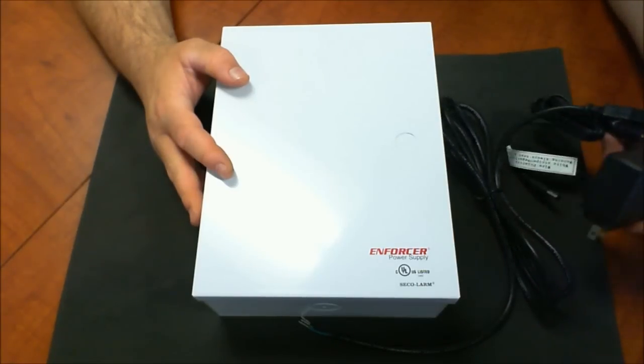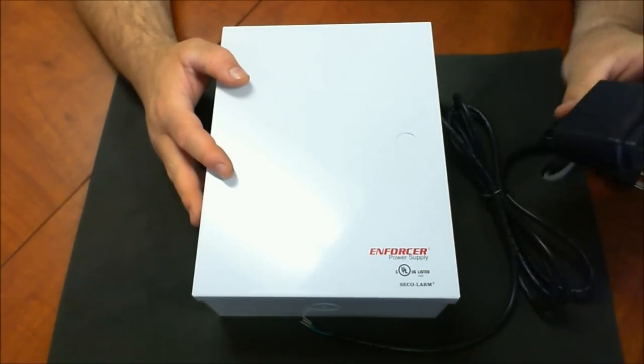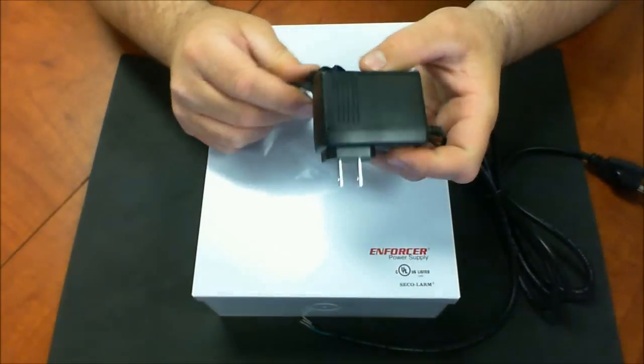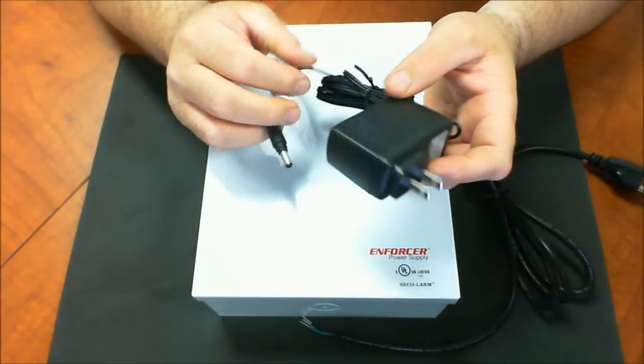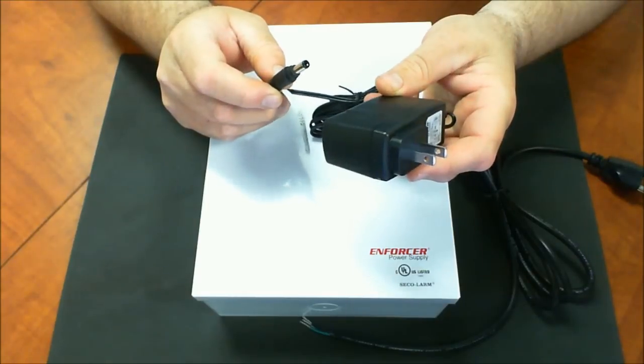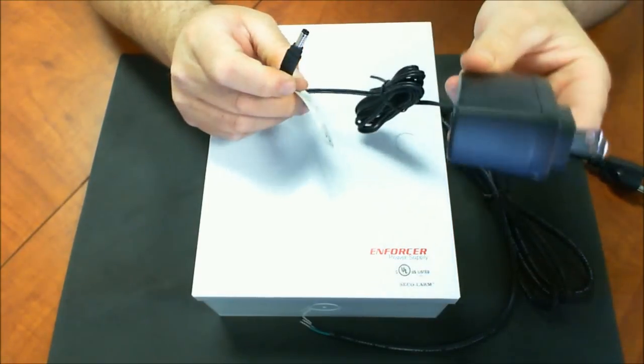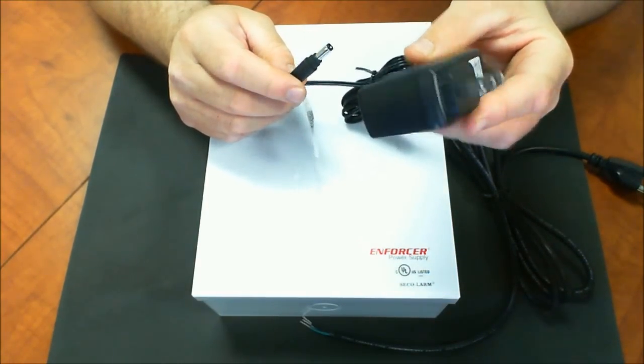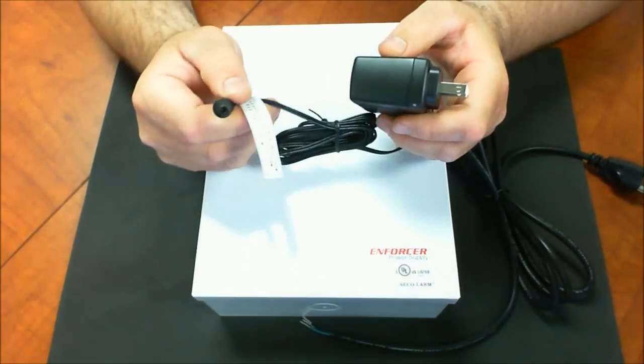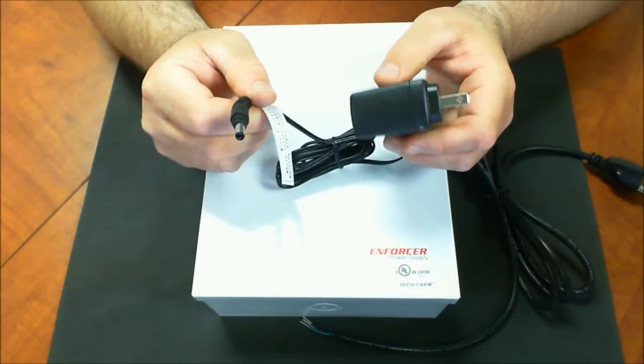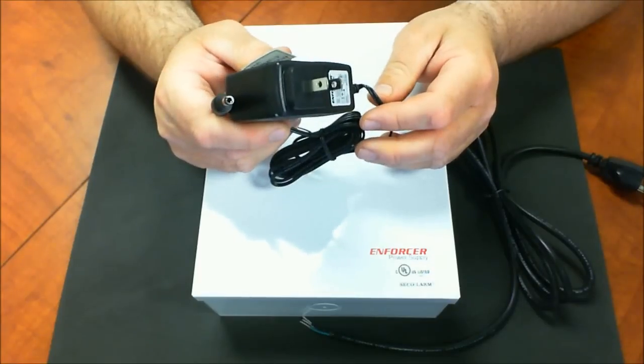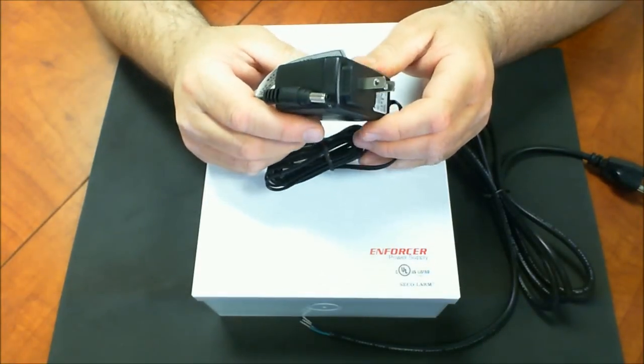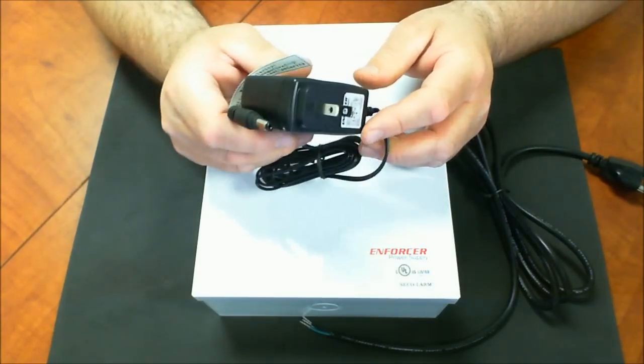Two of the most popular ways to power cameras: one is you can use a 12-volt DC plug-in transformer and this would basically plug right into the wall or an outlet or a surge protector and the other side would plug into your power cable. This is actually a 2-amp transformer so it's pretty popular. I don't really recommend it.